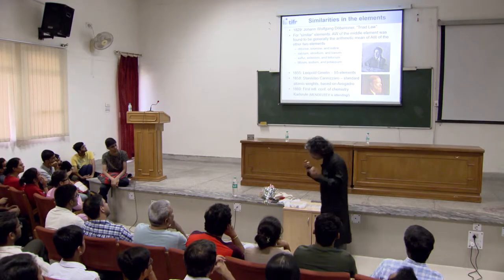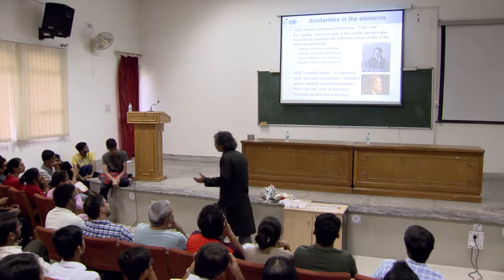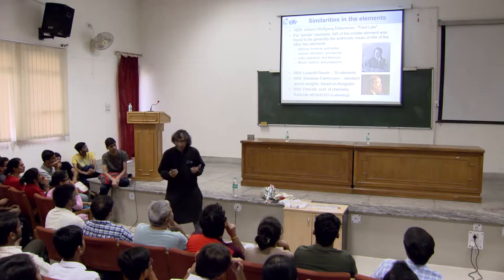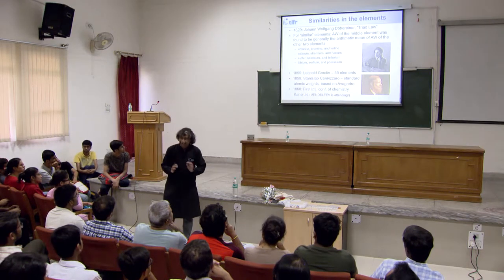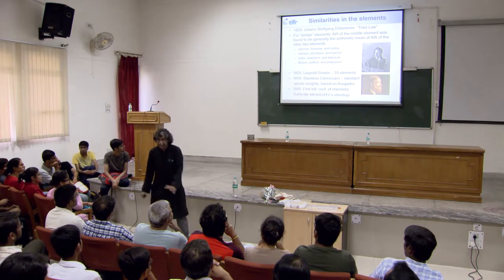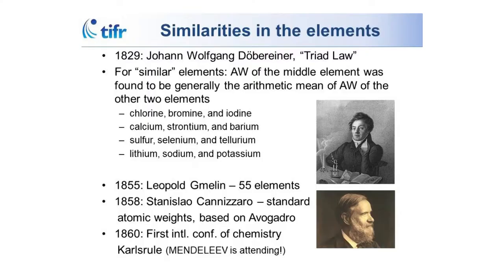In the 1800s, lots more elements were discovered and people started trying to find trends. The first person to find trends was a German — Döbereiner — who basically said there are elements with similar properties, and in these triads: the atomic weight of bromine is approximately chlorine plus iodine divided by 2; atomic weight of strontium is calcium plus barium divided by 2. There are trends, but just empirically.